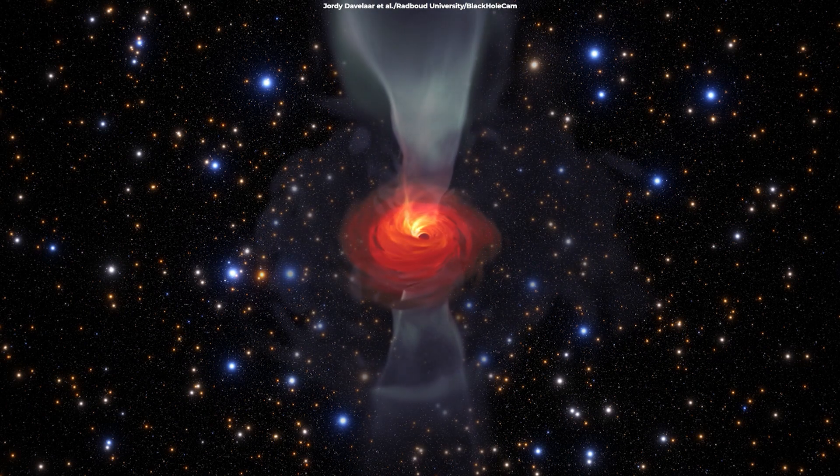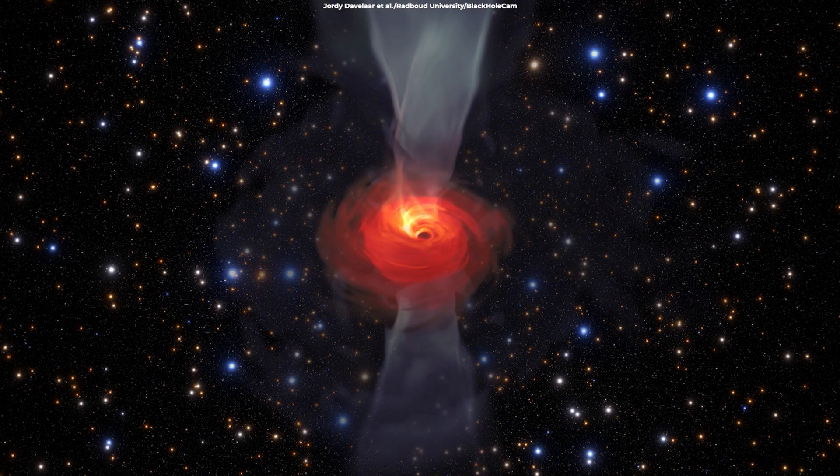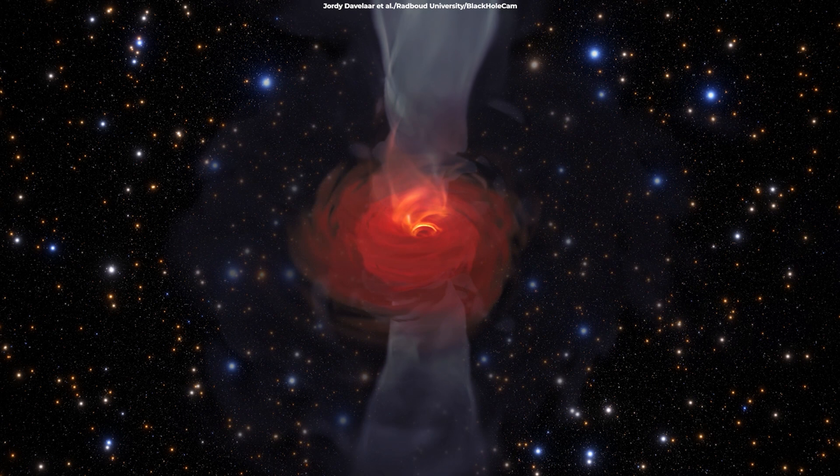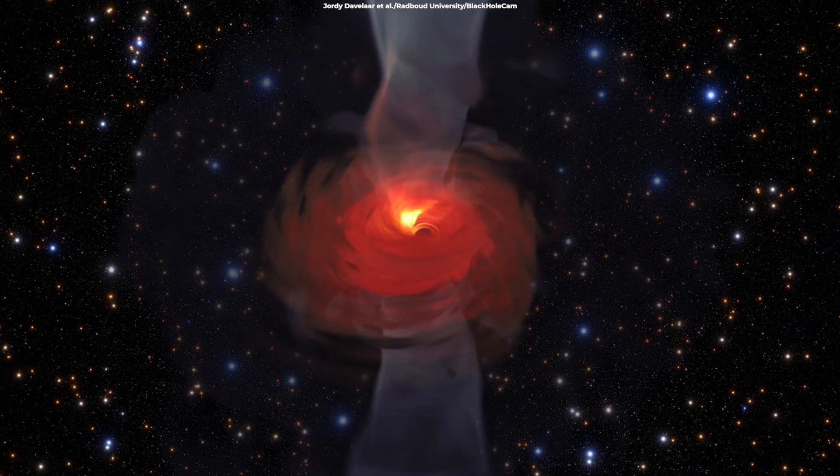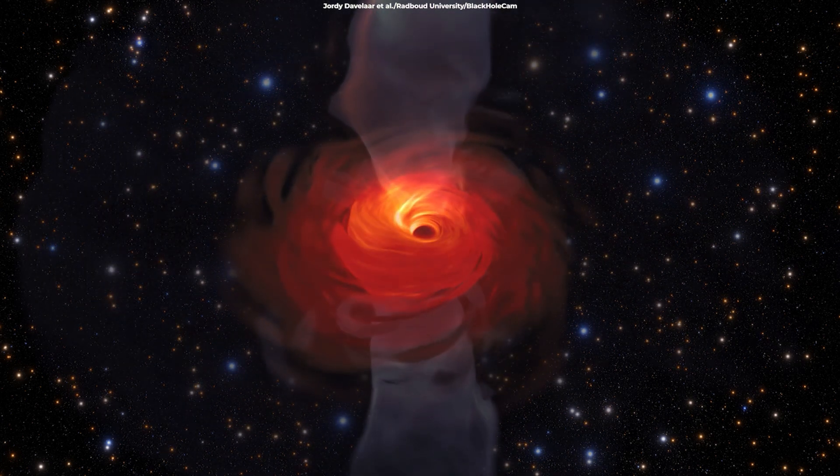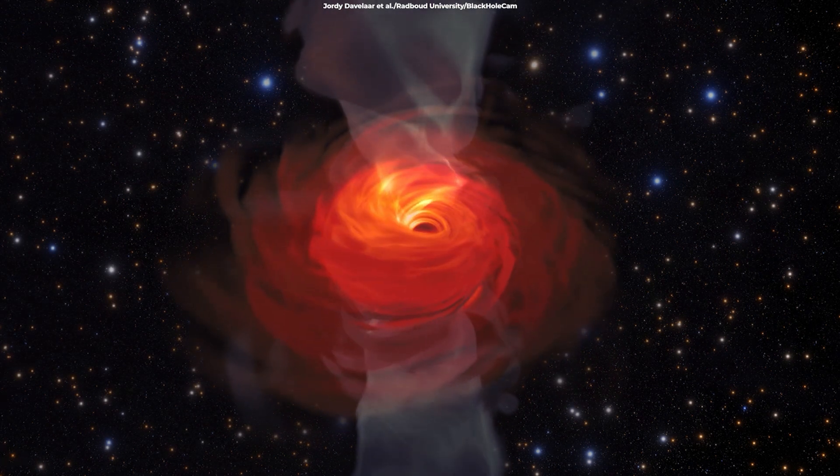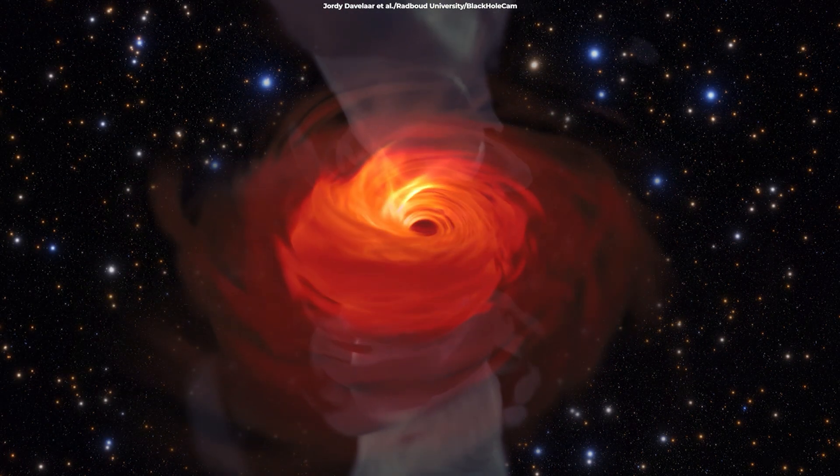In the case of a charged Reisner Nordstrom or rotating Kerr black hole, it is possible to avoid the singularity. Extending these solutions as far as possible reveals the hypothetical possibility of exiting the black hole into a different space-time with the black hole acting as a wormhole.